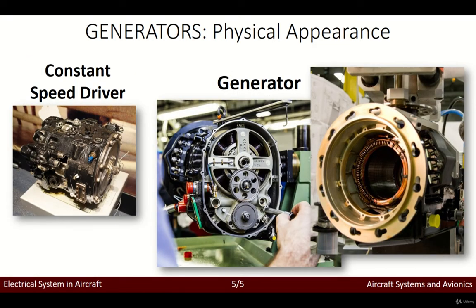Here's what it would look like physically if you were to work on an aircraft. You would see something like this for the constant speed drive. It might vary a bit because the design of the IDGs changes quite a lot depending on the aircraft. The generator would look something like this — this is the stator we were talking about before, and you can see the coils which provide the three-phase generation of electrical currents. So with this we can go to the next class.